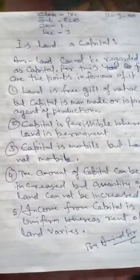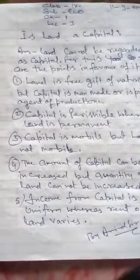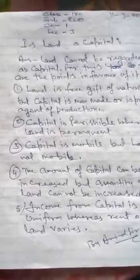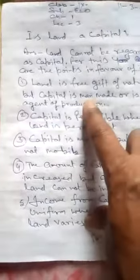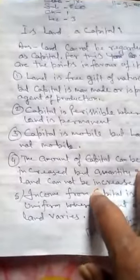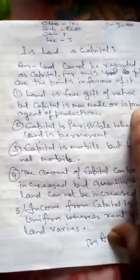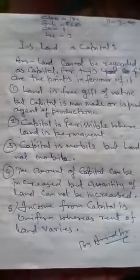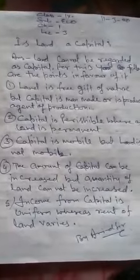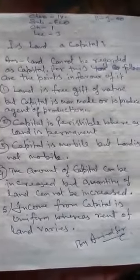First of all, you have to answer that land is not regarded as capital because of the following features. The first point is: land is a free gift of nature, meaning it has been provided or bestowed to us by nature. While capital is produced by the agents of production — factors like land and labor produce capital.